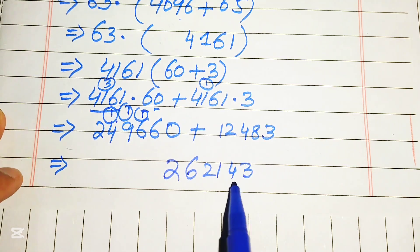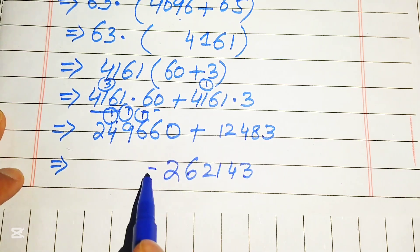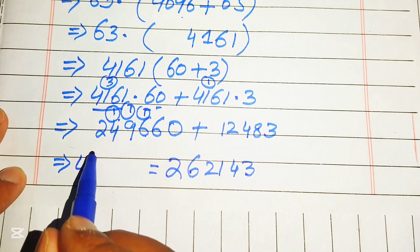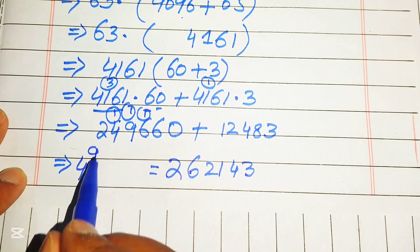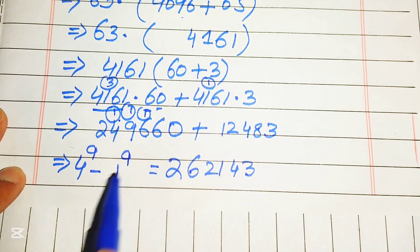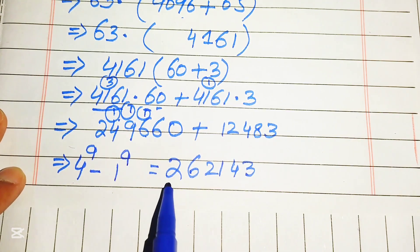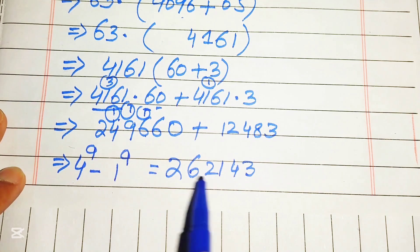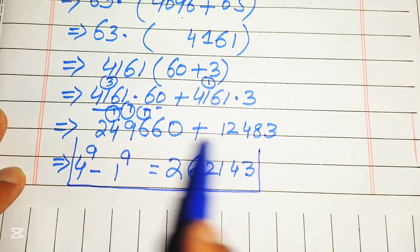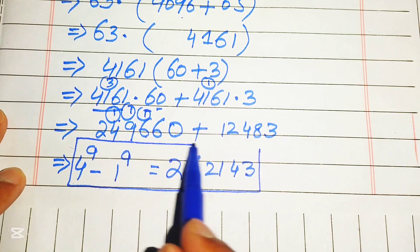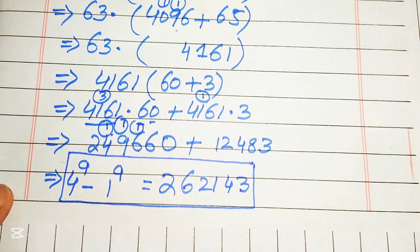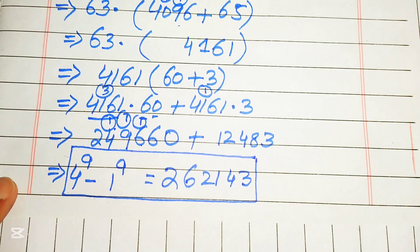So the final answer of the given expression 4 to the power of 9 minus 1 to the power of 9 equals 262143. This is the final answer. Thank you so much for watching this video — please subscribe to my channel for more exciting videos.